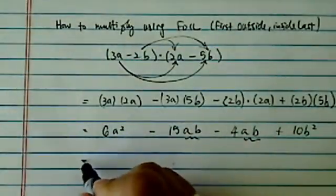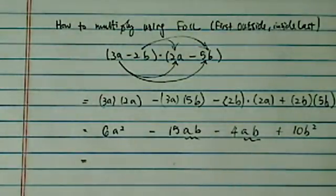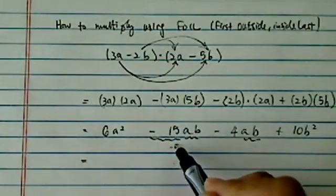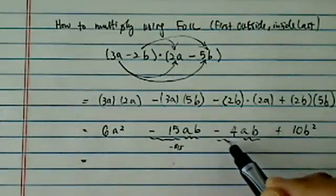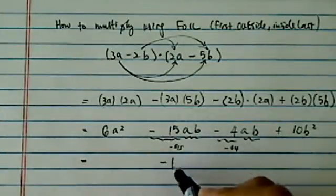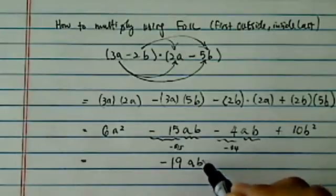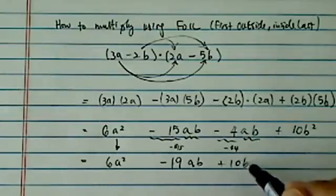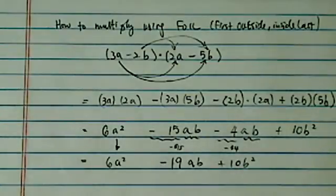So we're going to gather them or combine them however makes sense to you. So here we're going to think of minus 15, so you owe $15 and then minus 4, you owe four more dollars. So together you owe $19. 6a squared gets copied over here and plus 10b squared gets copied over there.